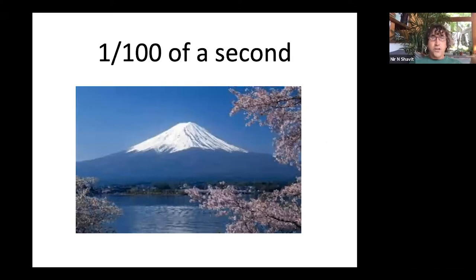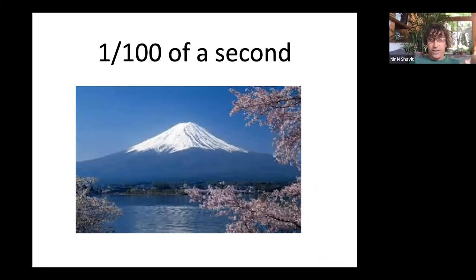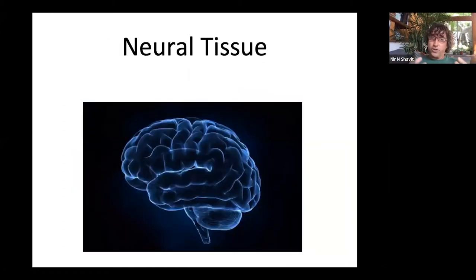You're looking at a slide, and most of you can recognize immediately that this is Mount Fuji — and you do that in about a hundredth of a second. A hundredth of a second is a very, very short time, and yet your brain manages to actually identify exactly what you're seeing. You can also tell there's a tree in the corner, et cetera. And how do you do that? Well, you do it with your neural tissue — there is a computing infrastructure in your brain that enables you to do this.